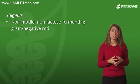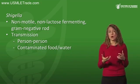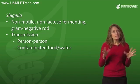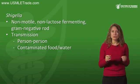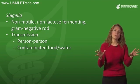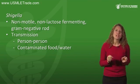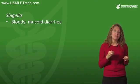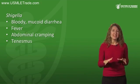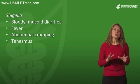Shigella is a non-motile, non-lactose-fermenting gram-negative rod that can be grown from stool culture. It can be transmitted through direct person-to-person spread or from contaminated food and water. It's very infectious — you only need 10 Shigella organisms to cause dysentery. It usually causes a small amount of bloody mucoid diarrhea along with fever, abdominal cramping, and tenesmus.